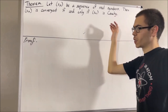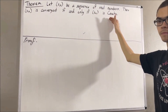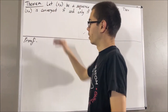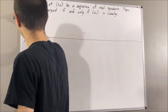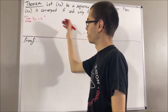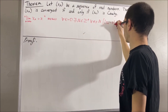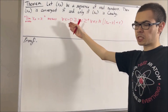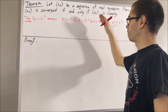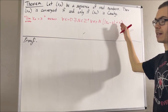Let's first remind ourselves what it means for xn to be convergent and what it means for xn to be Cauchy. To say that xn is convergent — let's say that xn converges to x — by definition of convergence, this means: for every epsilon greater than zero, there exists a positive integer capital N, such that for all n greater than or equal to capital N, the absolute value of xn minus x is less than epsilon.